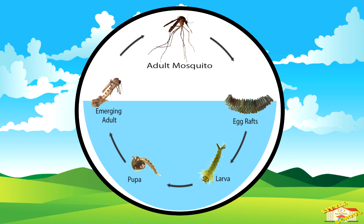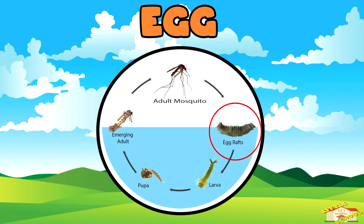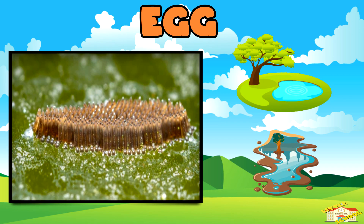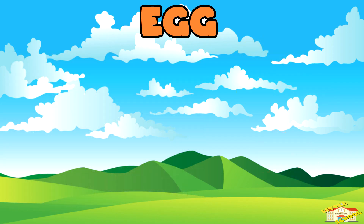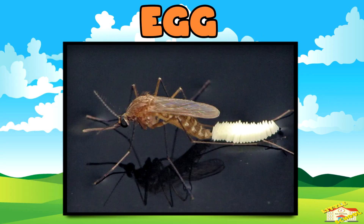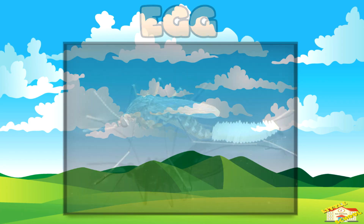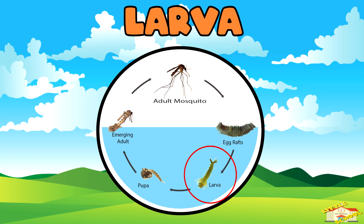Egg. A female mosquito lays her eggs on water, like ponds and puddles. Some mosquitoes lay eggs one at a time, while others lay them in groups that look like a raft floating on the water.